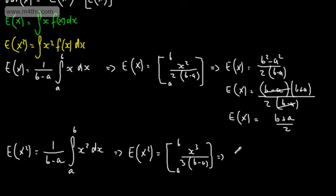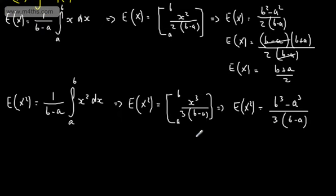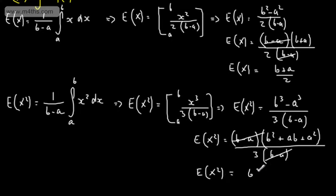Evaluating, E[X²] = (b³ minus a³) over 3(b minus a). This is a difference of cubes, so we factor as (b minus a)(b² plus ab plus a²). The (b minus a) terms cancel, giving E[X²] = (b² plus ab plus a²) over 3.